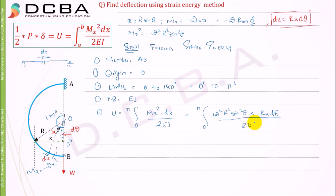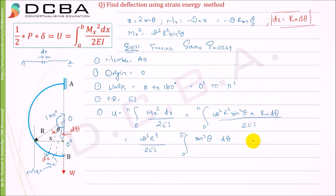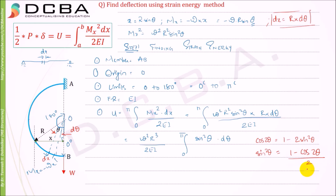Taking W²·r³ divided by 2EI outside the integral, we are left with the integral from 0 to π of sin²(θ)·dθ. We use the trigonometric identity: cos(2θ) = 1 - 2·sin²(θ), which gives sin²(θ) = (1 - cos(2θ)) / 2. Substituting this identity, U equals W²·r³ over 4EI times the integral from 0 to π of (1 - cos(2θ))·dθ.